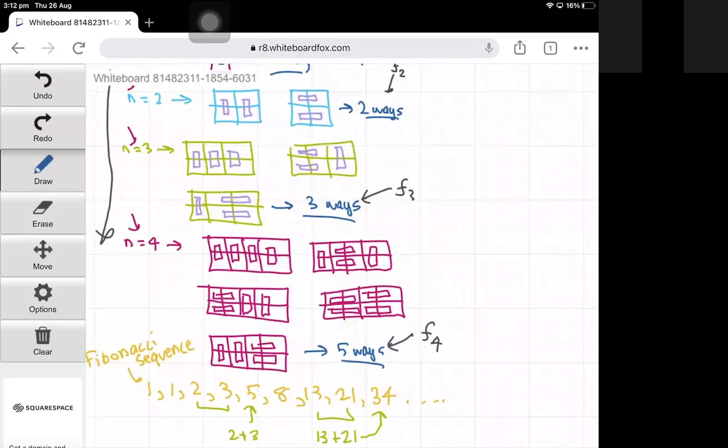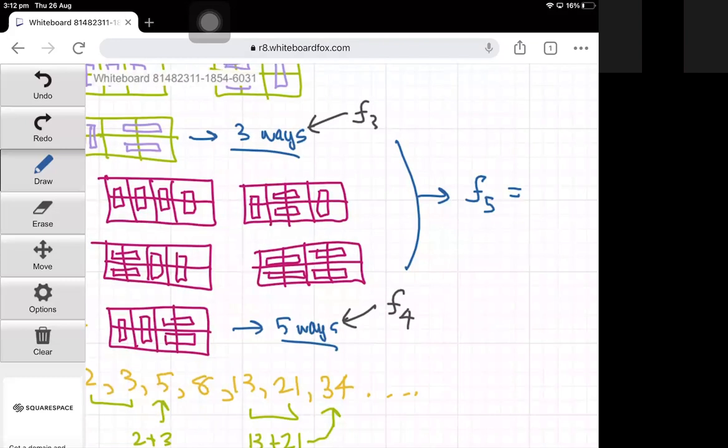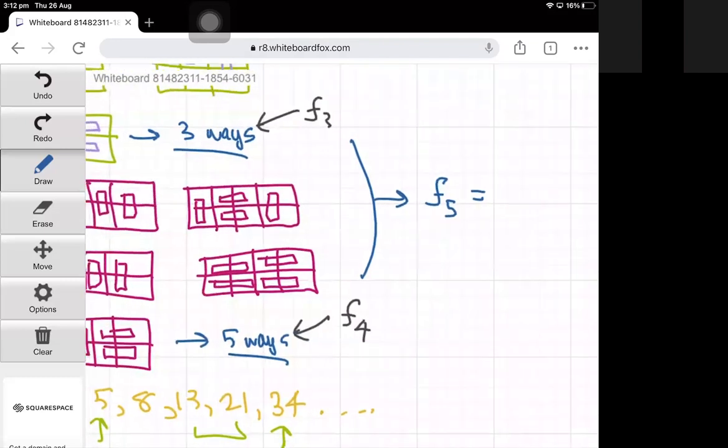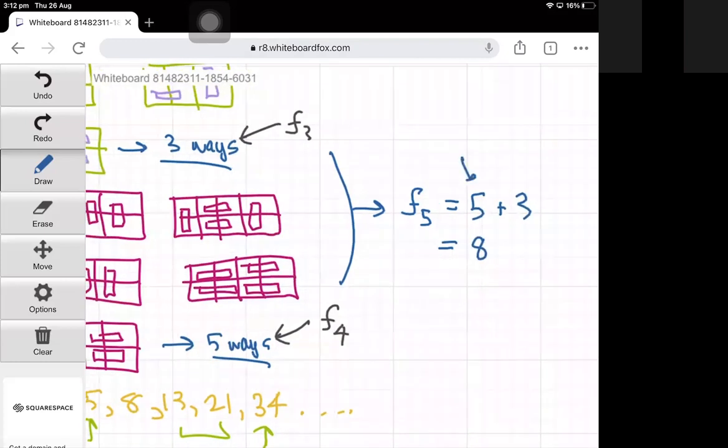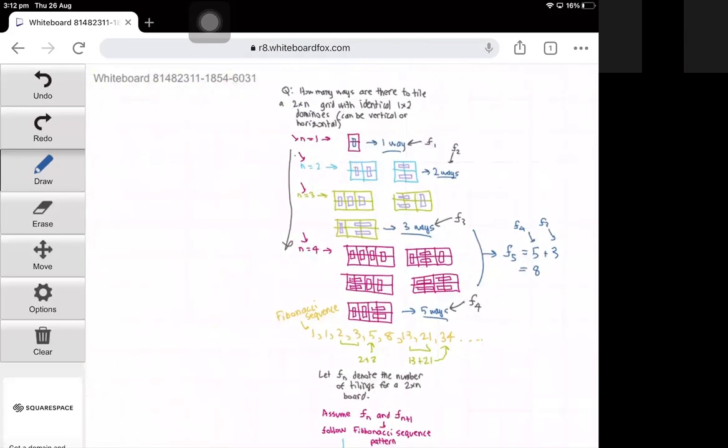As an example, if you have a go at computing F of 5, the F of 5 is not too big, you can try listing all the combinations yourself. You will see F of 5 will equal 5 plus 3, which equals 8. This is the sum of the two previous terms, F of 4 and F of 3. This is the reason why the number of ways of tiling a 2×n grid follows the Fibonacci sequence.